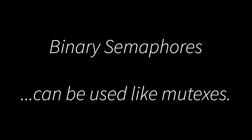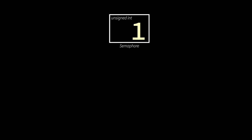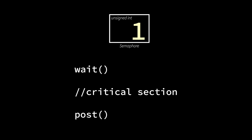What are semaphores good for? Sometimes they're used like mutex locks to protect some critical shared resource. These are called binary semaphores, since they're only allowed to have values 1 and 0. You initialize the semaphore to 1, and whenever a thread wants to access the shared resource or critical section of code, it first calls wait — which is like grabbing a lock. When the thread is finished, it calls post — like releasing the lock. If another thread calls wait between those two calls, it has to wait until post is called.